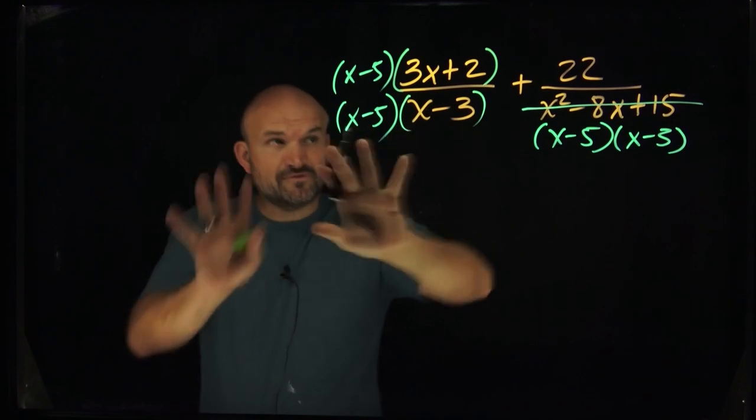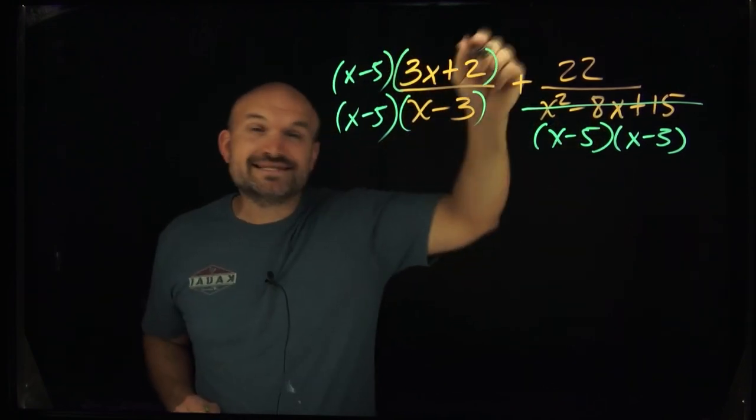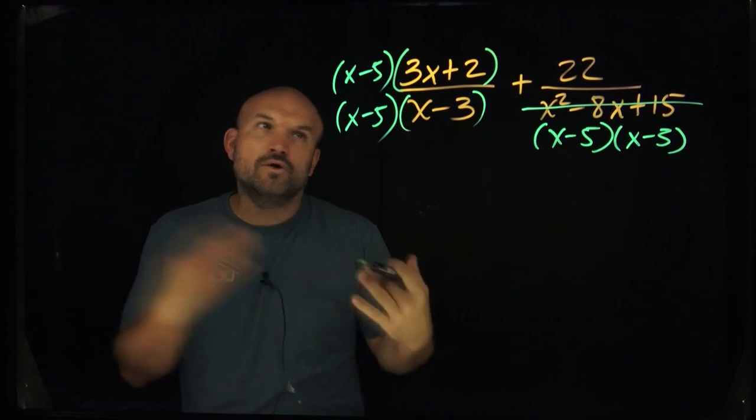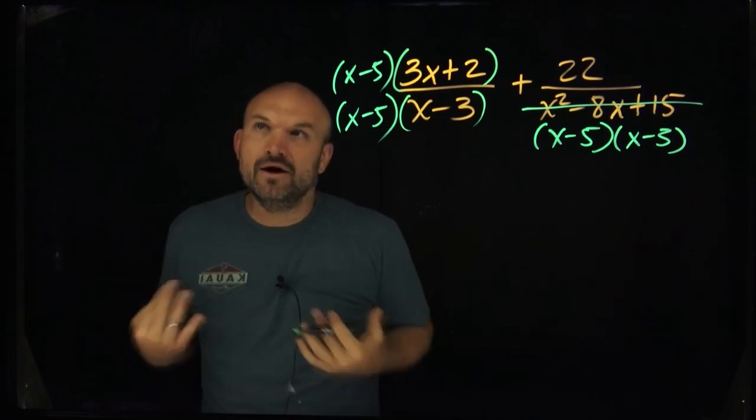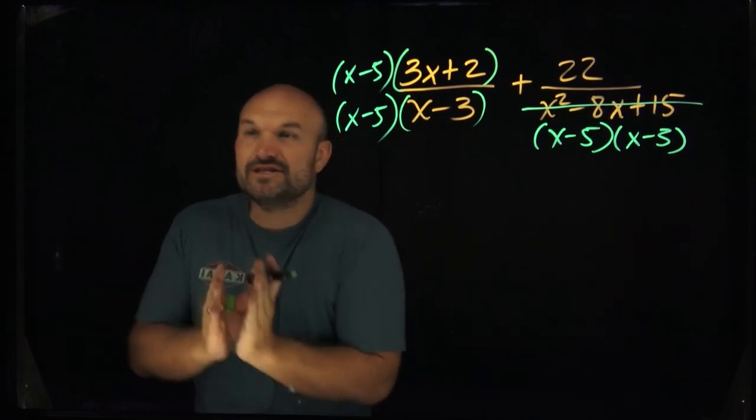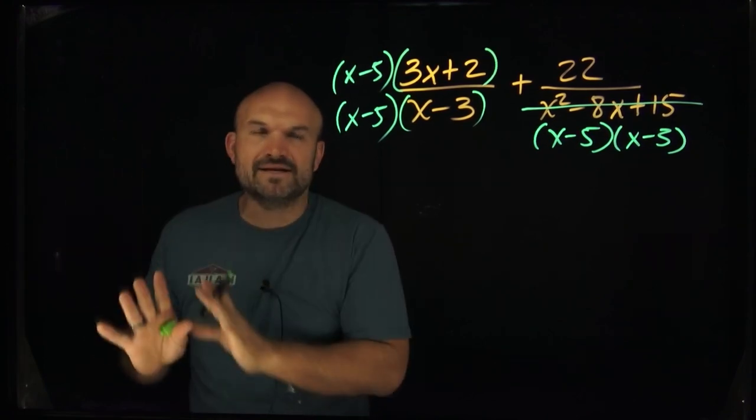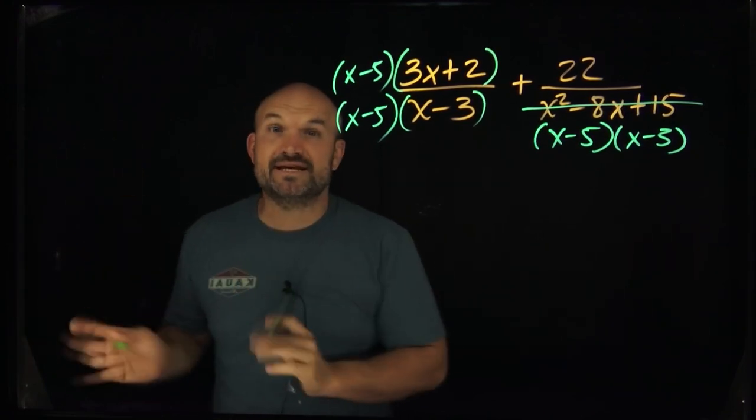The next thing I'm going to want to do before I go ahead and combine these is I'm going to want to simplify this expression. And you can do that just by using FOIL or the distributive property. Sometimes you can do it in your head, or a lot of times I just tell my students just put it on the side of the paper and just work it out to make sure that you are not making any mistakes.